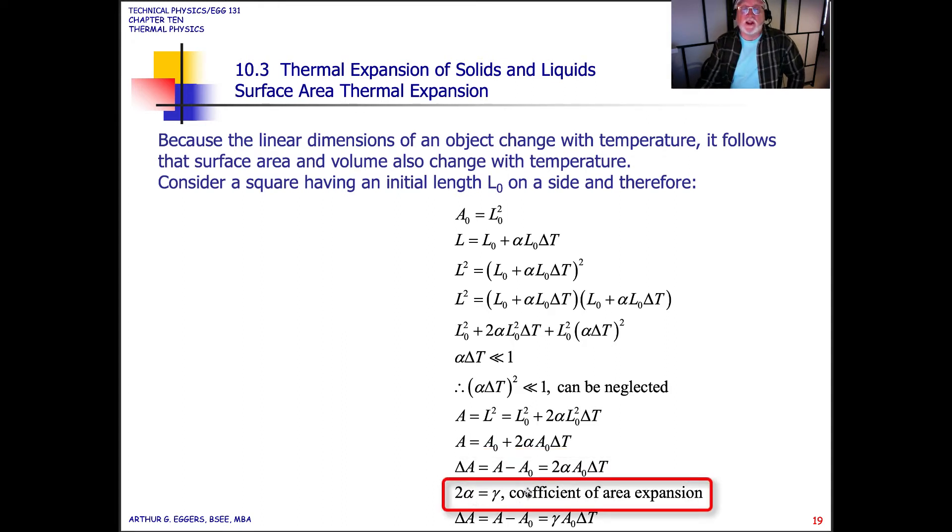So alpha is for linear. This little symbol here is the coefficient of area expansion. And if I'm not mistaken, that's gamma. Delta A, then, the area is equal to the change, which is equal to the last expression.